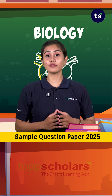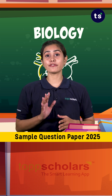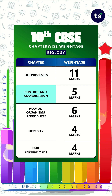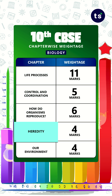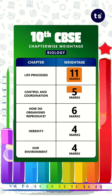Lastly, for biology, we have five chapters: life processes, control and coordination, how do organisms reproduce, heredity, and our environment, which have eleven, five, six, four, and four marks respectively.